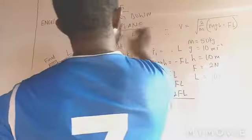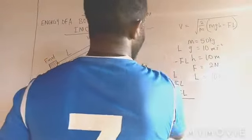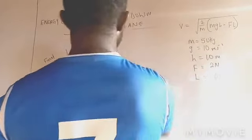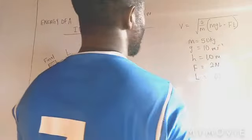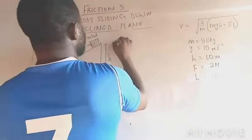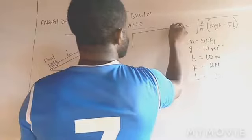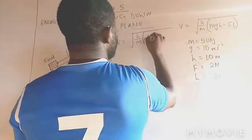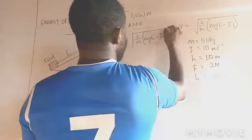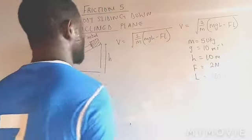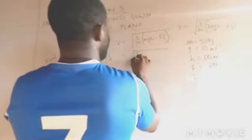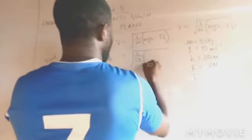Putting all these values now, the formula is V equals square root 2 over M, open bracket, MGH minus F. Don't forget, this F is frictional force. So I have square root 2 over 50, open bracket, 50 times 10 times 10 again.